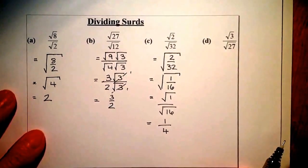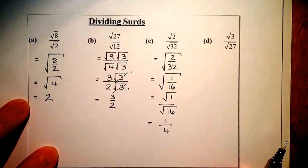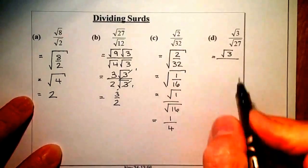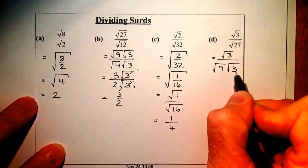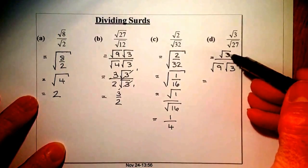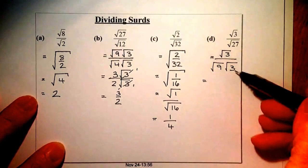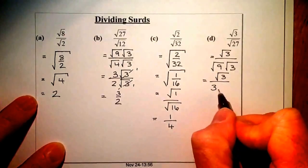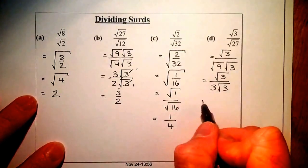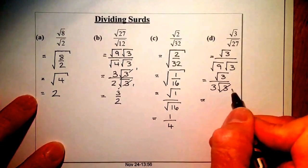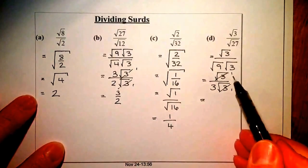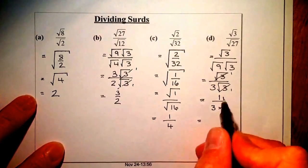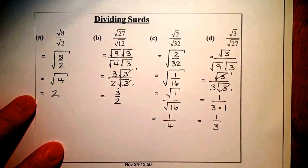For root 3 over root 27, I'll simplify root 27 on the bottom: that's root 9 times root 3. On the top I can't simplify root 3, so I leave it as is. I've got root 3 on the top and root 9 times root 3 on the bottom. The square root of 9 is 3, giving root 3 over 3 root 3. Dividing the top and bottom by root 3: the top goes to 1 and the root 3 in the bottom cancels to 1, leaving 1 over 3 as the final answer.